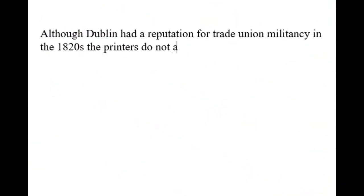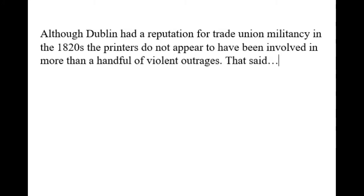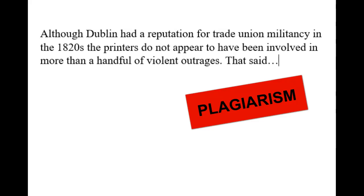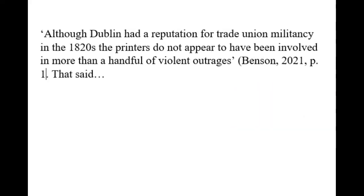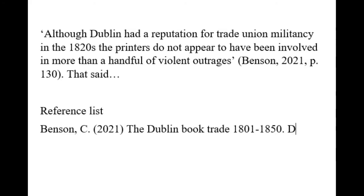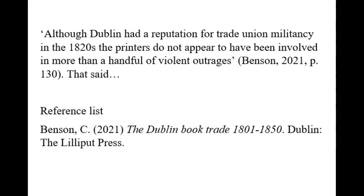If I was writing my essay and I wrote: 'Although Dublin had a reputation for trade union militancy in the 1820s, the printers do not appear to have been involved in more than a handful of violent outrages,' and then went on to write my next sentence — that implies those are my words. In fact, it's a direct quotation from a book called the Dublin Book Trade, 1801 to 1850 by Charles Benson. So to leave it looking like this would be plagiarism. Instead, my essay needs to look like this. In Harvard style, I would add single quotation marks around the quoted text and my in-text citation with page number. Then on my reference list at the end of my essay, I'll add a full reference in Harvard style, leaving that clear breadcrumb trail back to my source.